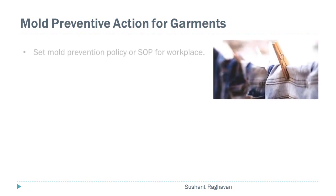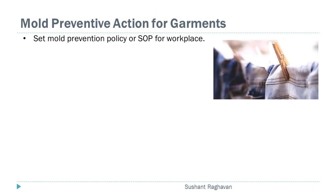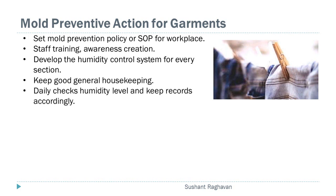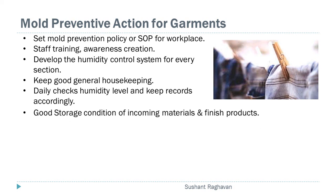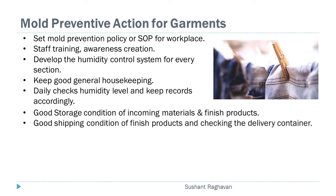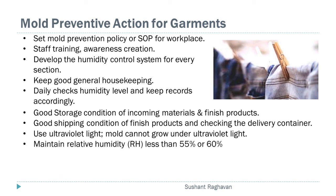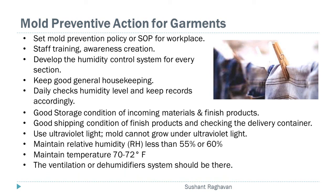Mold preventive actions for garments: set a mold prevention policy or recipe for the workplace; staff training and awareness creation; develop a humidity control system for every workstation; keep good general housekeeping; daily check humidity levels and keep records accordingly; good storage conditions for incoming materials and finished products; good shipping conditions for finished products and checking the delivery container; use ultraviolet light — mold cannot grow under ultraviolet light. Maintain relative humidity (RH) less than 55–60%, maintain temperature at 72 degrees Fahrenheit, and ensure a ventilation or dehumidifier system is in place. Ensure section cleanliness.